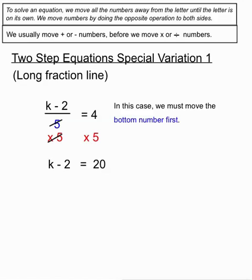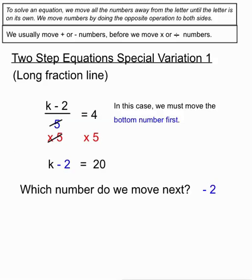On the right hand side when we multiply by 5 we just do that calculation, 4 times 5 is 20. Now that leaves us with a very simple one-step equation to finish off with. One step to the end. So we ask ourselves which number do we have to move next? It's pretty obvious that if we want the letter to be on its own we'll move that minus 2 next. What's the opposite of a minus 2?